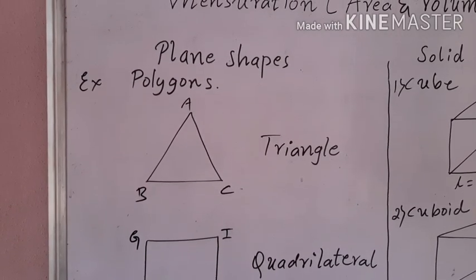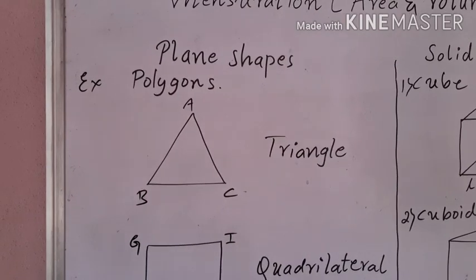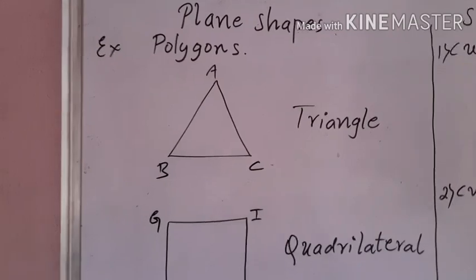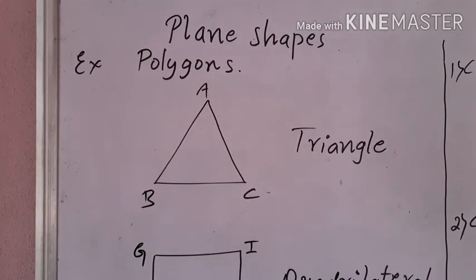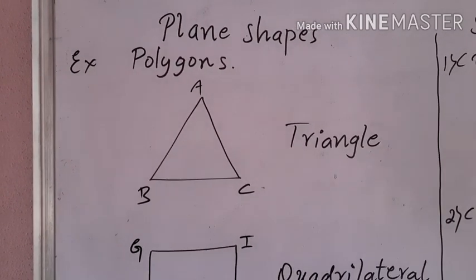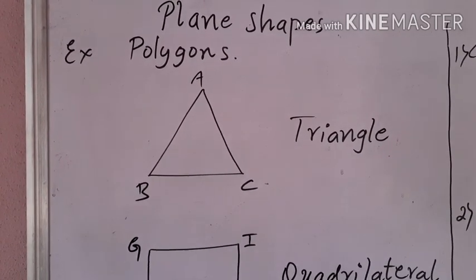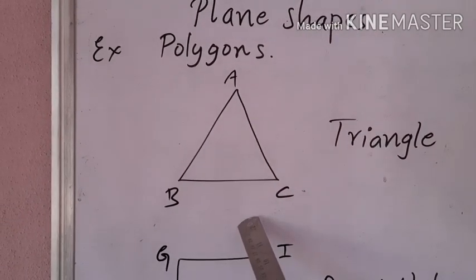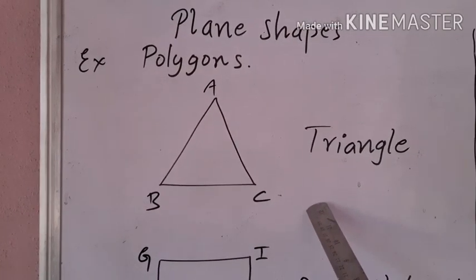Let us understand what polygons are. All plane shapes are not polygons, but all polygons are plane shapes. 'Poly' means many and 'gons' means sides. Any closed plane figure with 3 or more than 3 sides is called a polygon. A triangle is a closed plane figure with 3 sides — that is why triangle is the first polygon, and it is a plane shape.